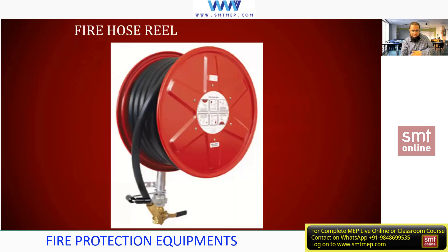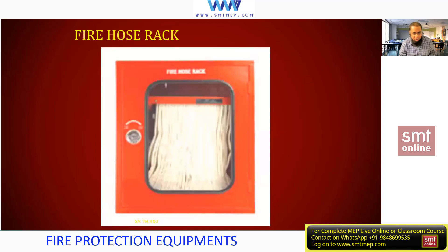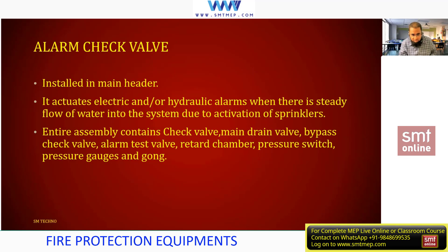Next, fire hose reel - this is the rubber type, non-collapsible. The nozzle is connected at one end and the other end is connected to the ball valve. This red component is called hose reel, which you'll find in any mall or many locations. Next, fire hose reel with cabinet - this is inside the cabinet. Next, hose rack. For the hose rack you can only use the canvas type so that it can be folded in a zigzag format; in case of fire it can be easily pulled out.